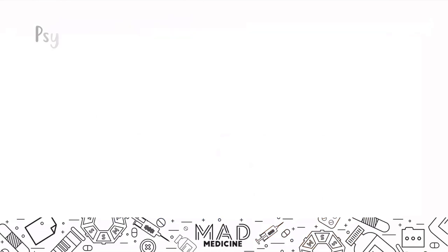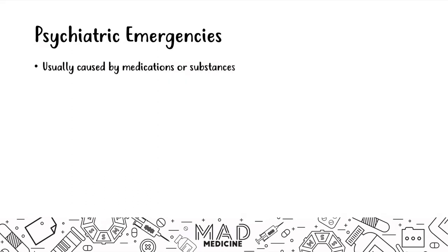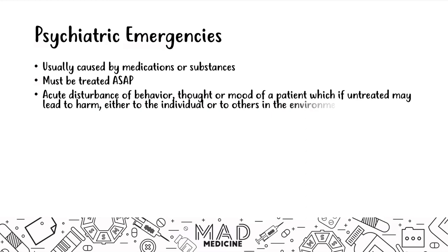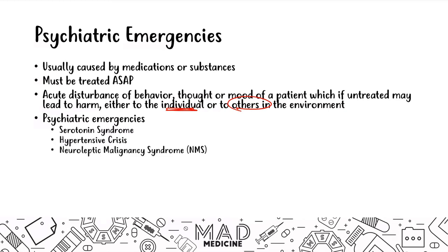Let's now talk about psychiatric emergencies — just a quick recap. These are usually caused by medications or other substances, and they must be treated right away. The reason why is that these acute disturbances in behavior, mood, and thoughts can actually lead to harm for the patient, for the individual, and for others in the environment. These psychiatric emergencies are pretty large in number when it comes to Step 1, and you definitely need to know each and every one of these in pretty good detail.